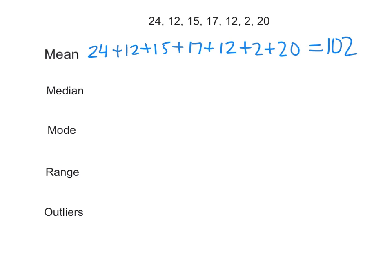So now we have to divide by the number of numbers. I'm going to count the numbers: 1, 2, 3, 4, 5, 6, 7 numbers. So we're going to take 102 and divide by 7, and I got 14.6. So the mean is 14.6.